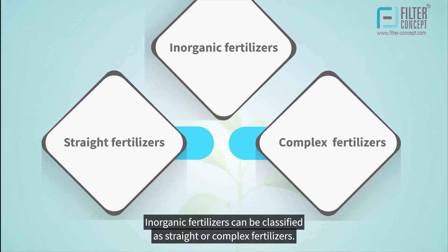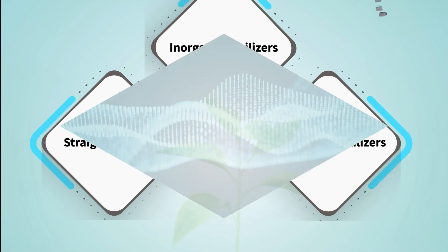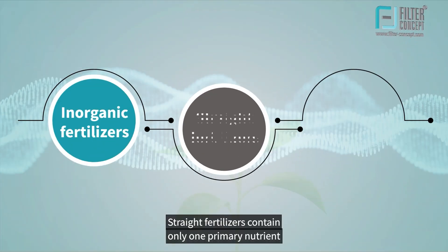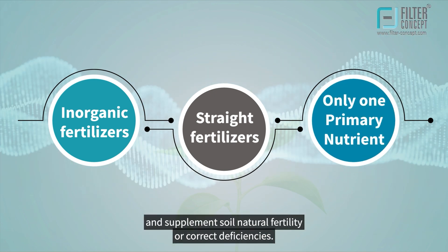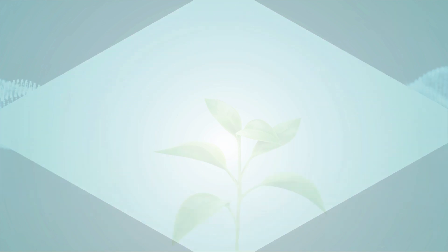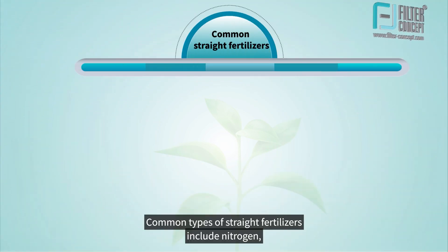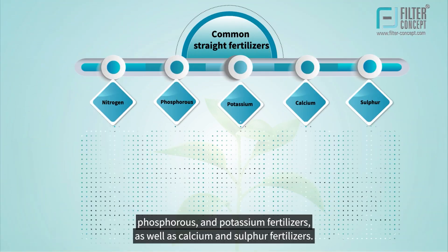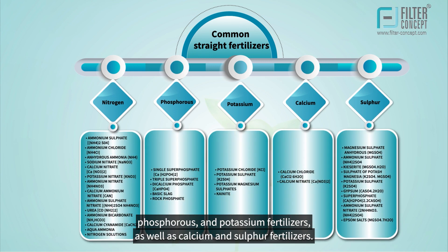Inorganic fertilizers can be classified as straight or complex fertilizers. Straight fertilizers contain only one primary nutrient and supplement soil natural fertility or correct deficiencies. Common types of straight fertilizers include nitrogen, phosphorus, and potassium fertilizers, as well as calcium and sulfur fertilizers.